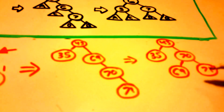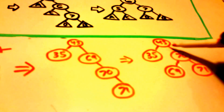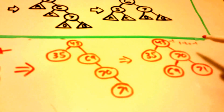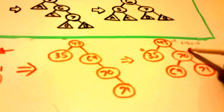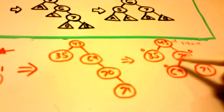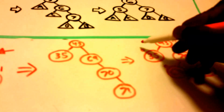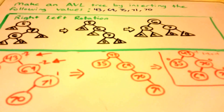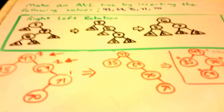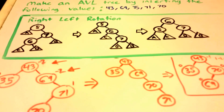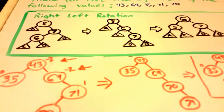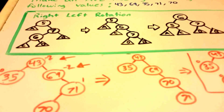Now let's check our balance factors. The left-hand side of 43 is 1 and the right-hand side is 2, giving negative one. Nodes 35, 69, 70, and 71 all have balance factors of zero. So our tree is balanced. Thanks guys — I hope you enjoyed this video on AVL trees. Please leave any questions, comments, or likes, and let me know if I made a mistake. See you in the next video. Don't forget to subscribe.